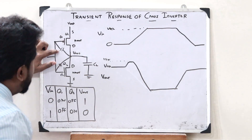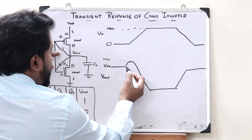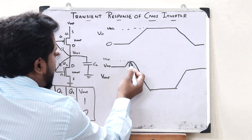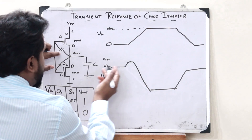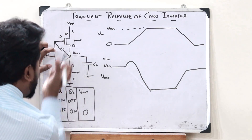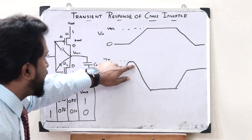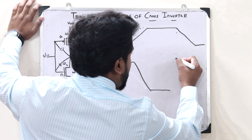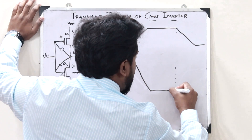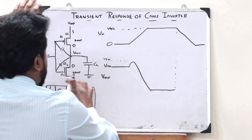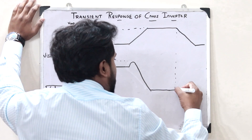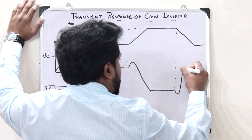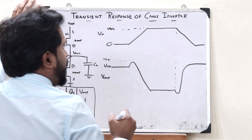This momentary increase in output voltage happens until V_TN — the threshold voltage of the NMOS transistor. Because of this capacitive property, the output voltage increases until it hits V_TN. When it reaches the threshold voltage of the NMOS transistor, the pull-down network pulls it back down to 0. Similarly, on the falling side of the input, because of this capacitive property there is a momentary decrease in the output, and then we get the required output.